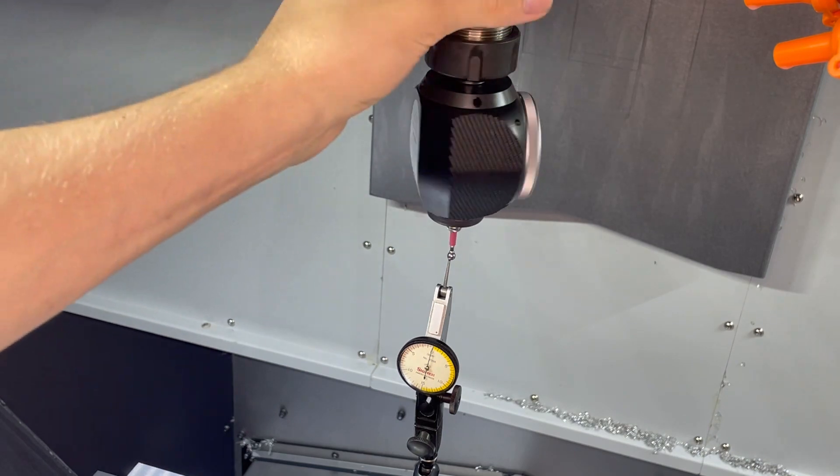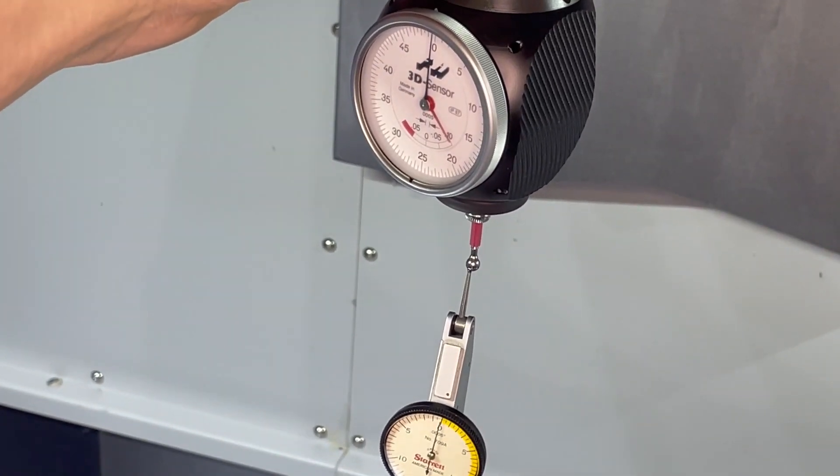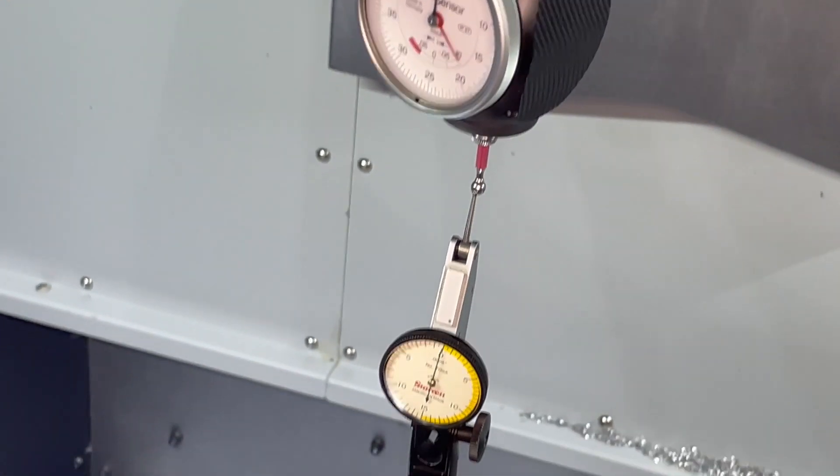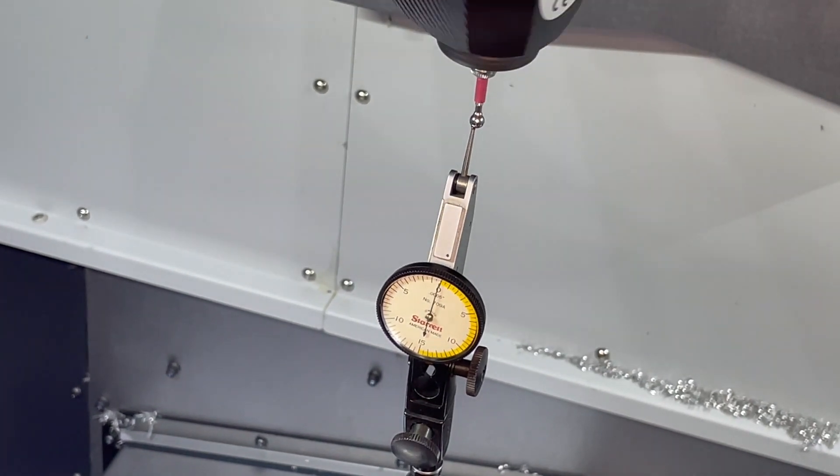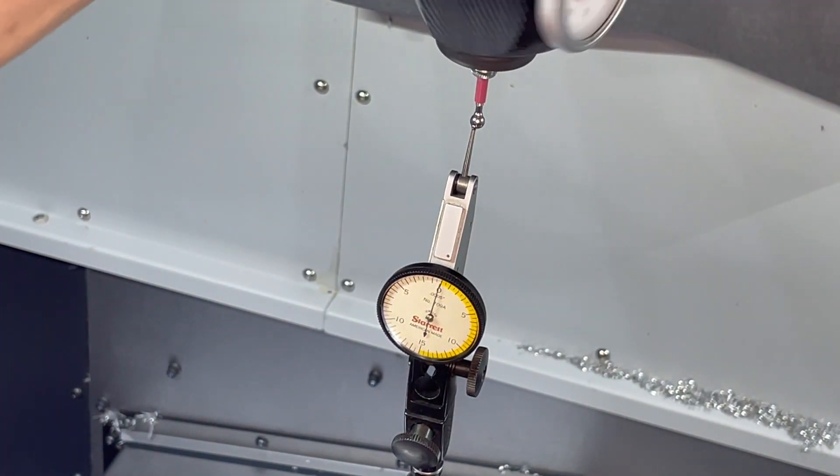I typically try to shoot for about one to two tenths of total indicated reading and I'm going to zoom in here on the indicator. You can see now we are about one or two tenths out of runout or total indicated reading.